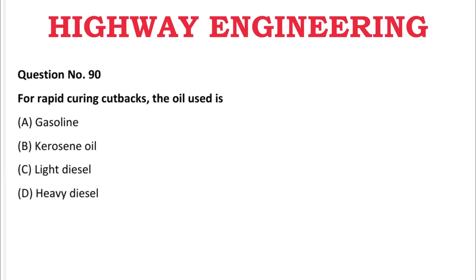Next question: In rapid curing cutbacks, the oil used is — A: gasoline, B: kerosene oil, C: light diesel, D: heavy diesel. The correct answer is A, gasoline.